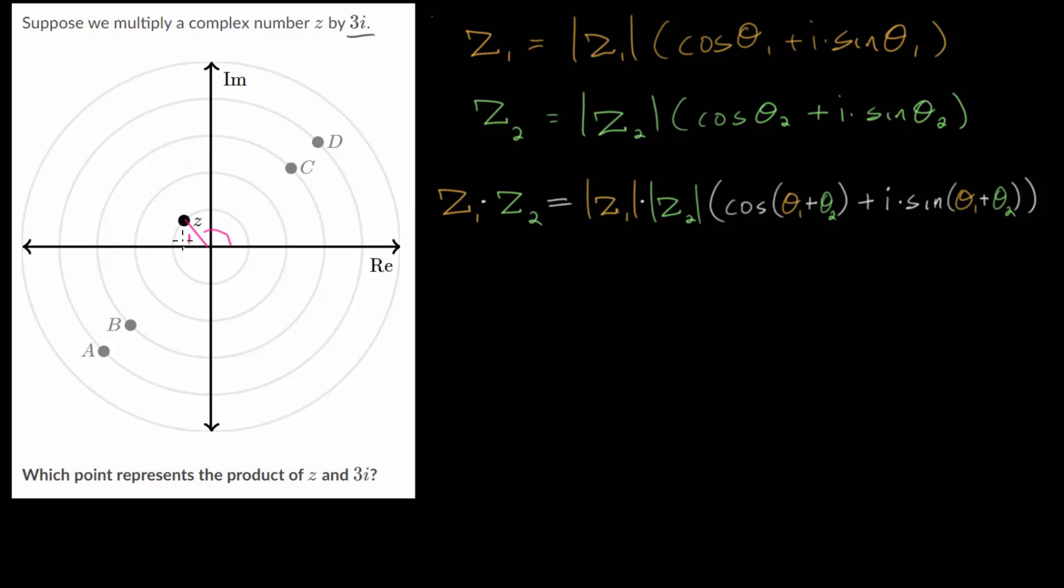It looks like this line splits this plane in half between the imaginary axis in the positive direction and the real axis in the negative direction. So we have 90 degrees plus roughly 45 degrees, so this angle should be about 135 degrees. Again its magnitude is 1 and we're going to multiply by 3i.